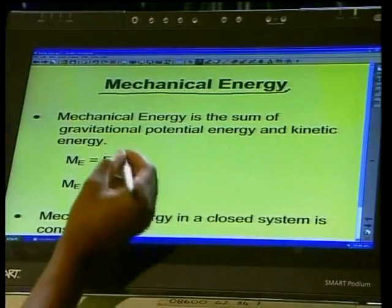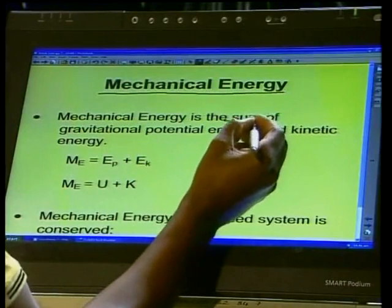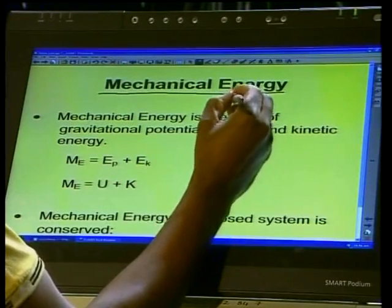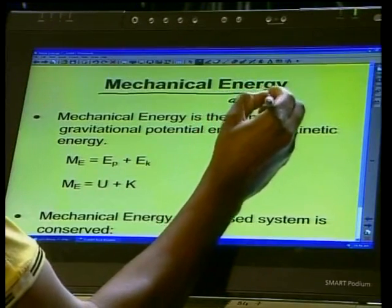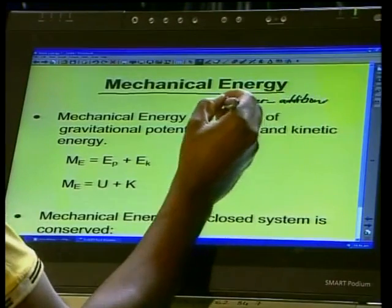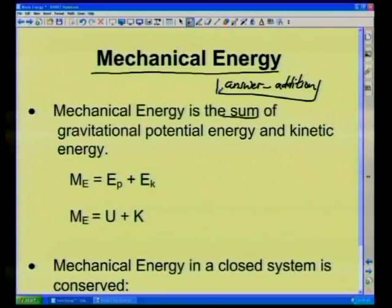We are now going to go to the section that talks about mechanical energy. What is mechanical energy? Mechanical energy is the sum — and sum is a mathematical term meaning the answer you get from addition — so mechanical energy is the sum of gravitational potential energy and kinetic energy of an object.